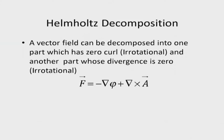This splitting is called Helmholtz decomposition. Let me try to explain it. The Helmholtz decomposition says — I did not mention the mathematical restrictions, such as that fields must fall faster than 1/r squared — but the statement is that a vector field can be decomposed into one part which has zero curl, which is irrotational, and another part whose divergence is zero, which is called solenoidal.